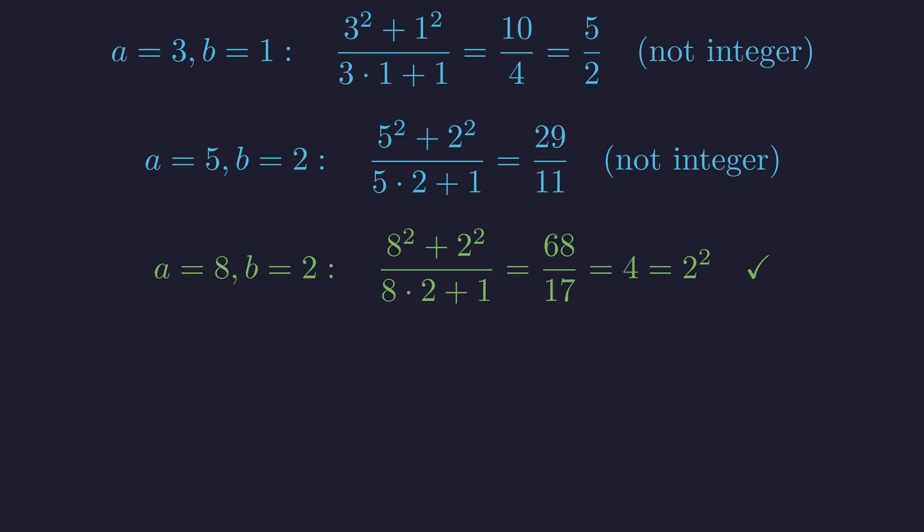But for a equals 8, b equals 2, we get 68 divided by 17 equals 4, which is a perfect square.